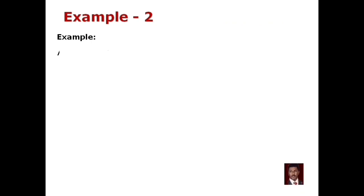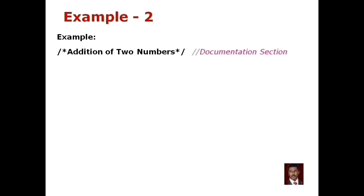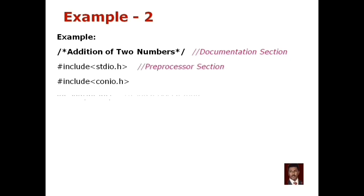First, the documentation section — for example, addition of two numbers. In the documentation section there is a name in the comment line. Then the preprocessor section, where header files are included. Then the global declaration section. In the global declaration, we declare variables and function declarations. This is the declaration of a function.